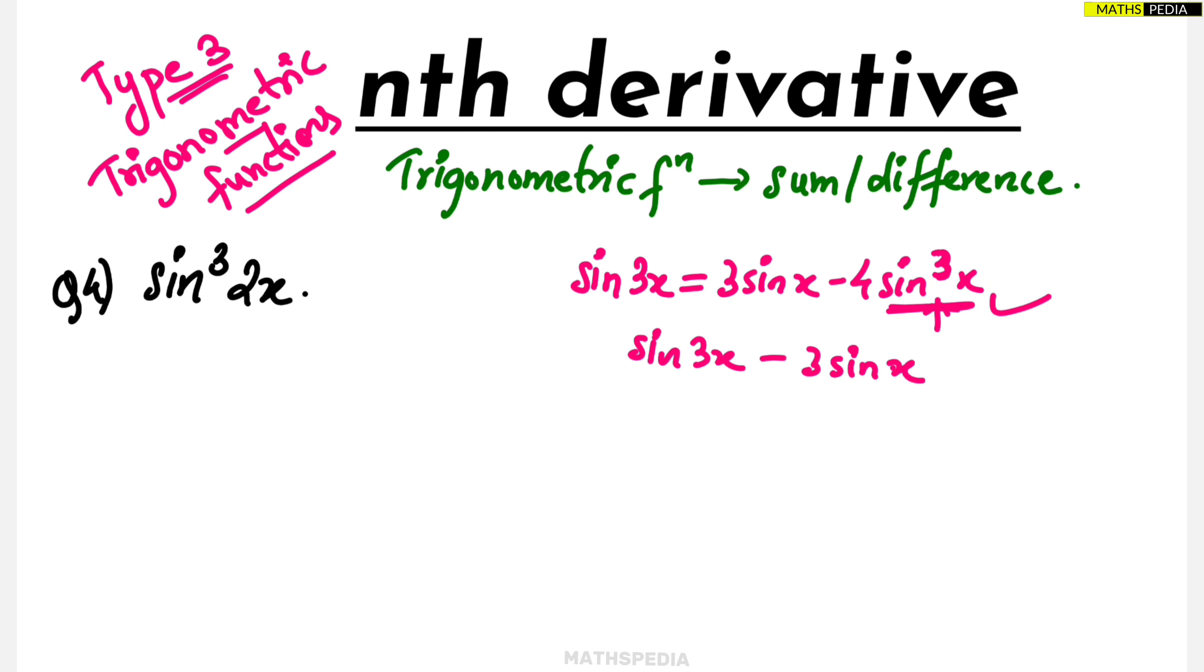Now minus 4 is there, so this will become plus, this will become minus, divided by 4 is equal to sine cube x. In other words, sine cube x can be written as 1 by 4, 3 sine x minus sine 3x. If you want, you can just remember this formula.